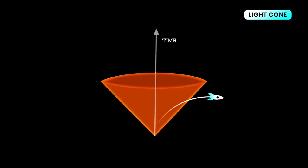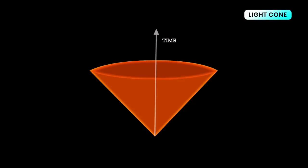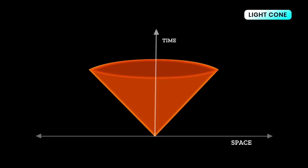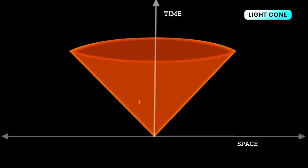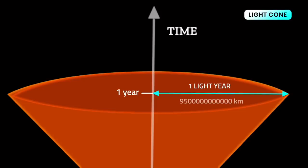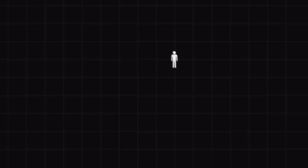If something wants to escape from the light cone, it would have to exceed the speed of light, which is impossible. With every tick of time, the cone expands at the speed of light. The cone's maximum angle is always 45 degrees with respect to time, because given any amount of time it will always travel a certain distance — in one second it travels 300,000 kilometers, and in one year it travels one light year, or 9.5 trillion kilometers through space.